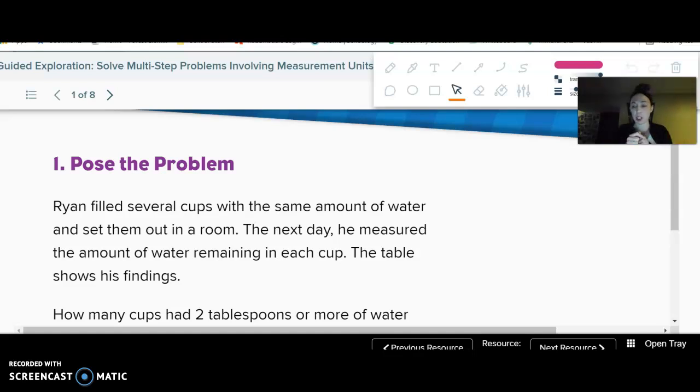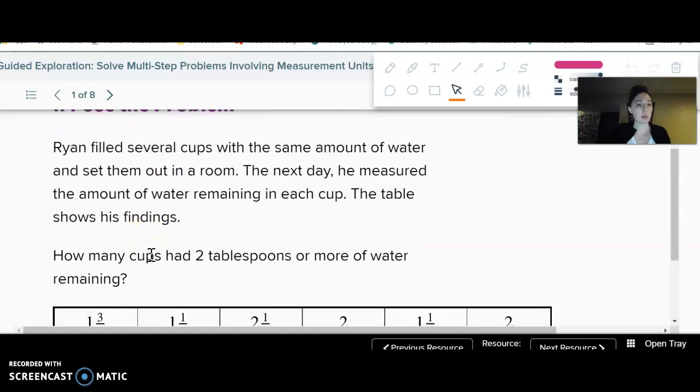The objectives are I can create line plots of data sets involving measurement data and really focus on I can interpret line plots. So understand what they mean. Now the problem we're gonna look at first, Ryan filled several cups with the same amount of water and set them out in a room. So just picture this dude like setting out cups of water in a room. The next day he measured the amount of water remaining in each cup. The table shows his findings.